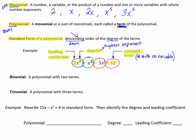There are different kinds of polynomials. A binomial is a polynomial with two terms. A trinomial is a polynomial with three terms. Notice the prefix bi, like bicycle, means two. The prefix tri, like triangle, means three.